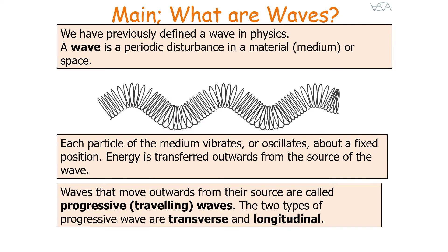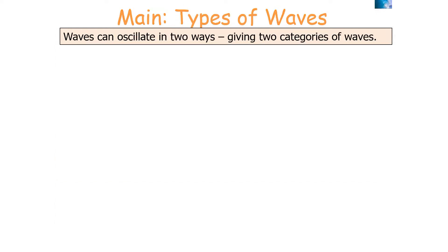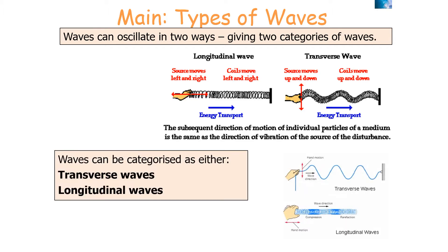We have previously defined a wave in physics: a wave is a periodic disturbance in a material, medium, or space. Each particle of the medium vibrates or oscillates about a fixed position, and energy is transferred outwards from the source of the wave. Waves that move outwards from their source are called progressive waves, and the two types of progressive waves are transverse and longitudinal waves, because waves can oscillate in two ways.